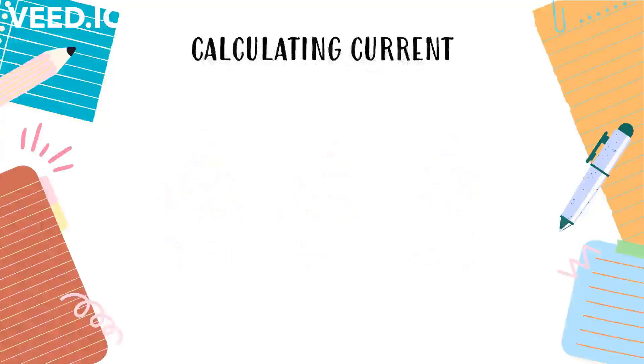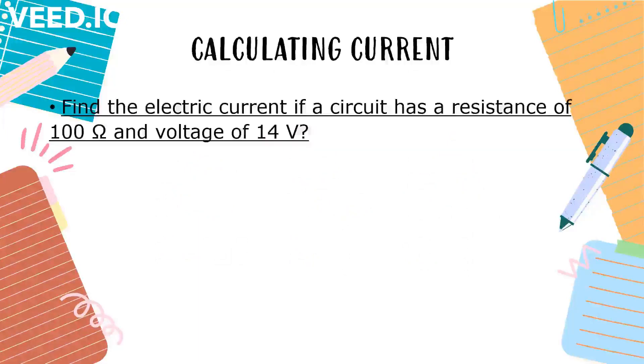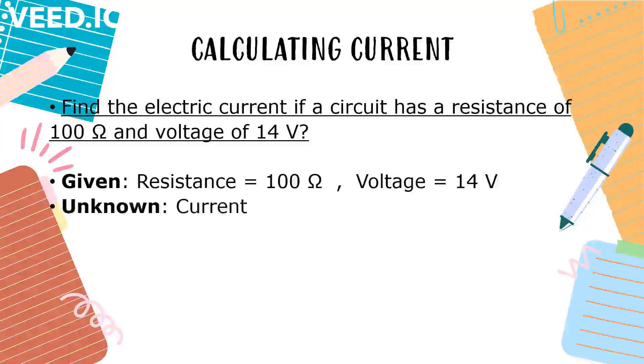Now, let's solve sample problems. Let's try calculating the electric current. Find the electric current in the circuit of the resistance of 100 ohm and voltage of 14 volts. Given, resistance is equal to 100 ohm. Voltage is equal to 14 volts. Unknown current.